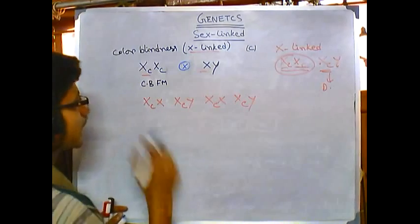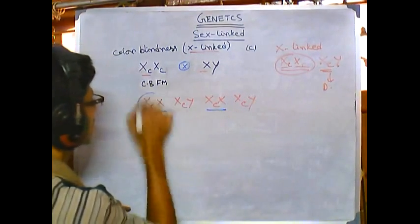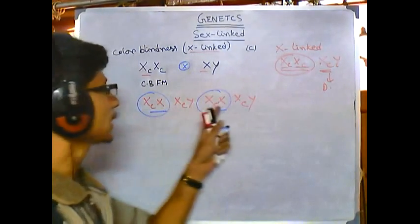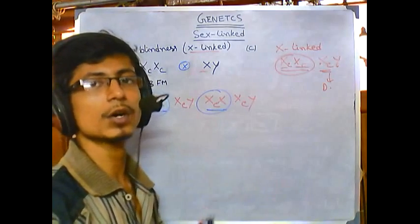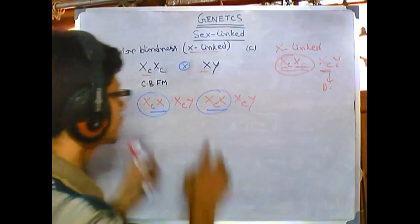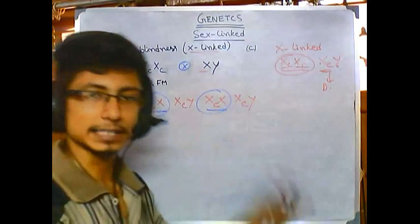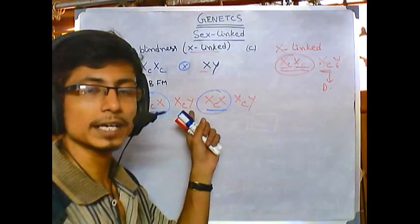But another X is free to act and this X replenishes all of its activity. So both of these females or both of these daughters that are produced, none of them are diseased, but they are carrying the faulty gene in one of the X chromosomes. So they are carriers.